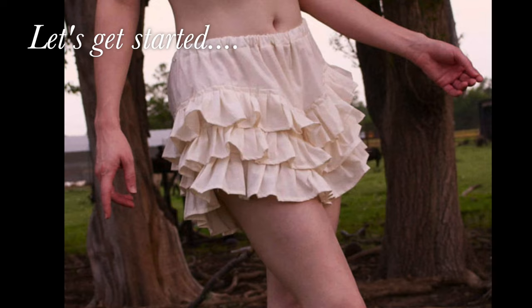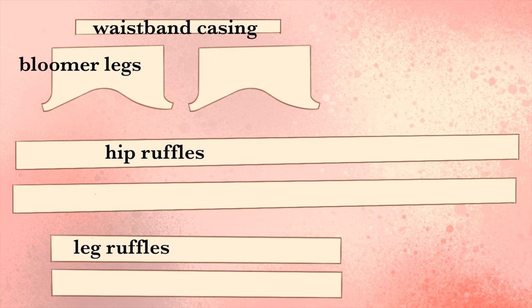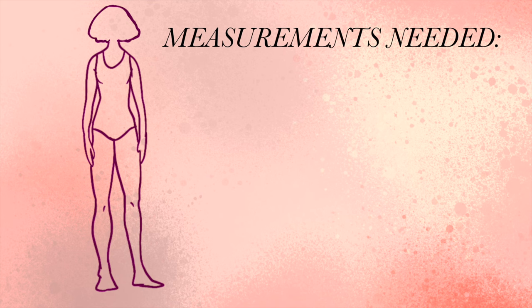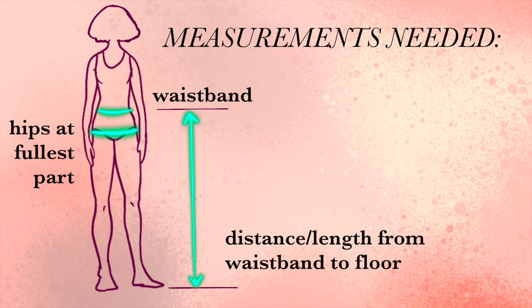So to begin, there are basically four parts of the pattern: the bloomer leg itself, the ruffles that attach to the leg hem, the hip ruffles which are sewn around the main part of the bloomers, and the casing for the elastic or drawstring waistband. The three measurements you will need are your hip measurement at the fullest part, your waistband measurement (whether that's your actual waist or your upper hips), and the distance from your waistband area to the floor.